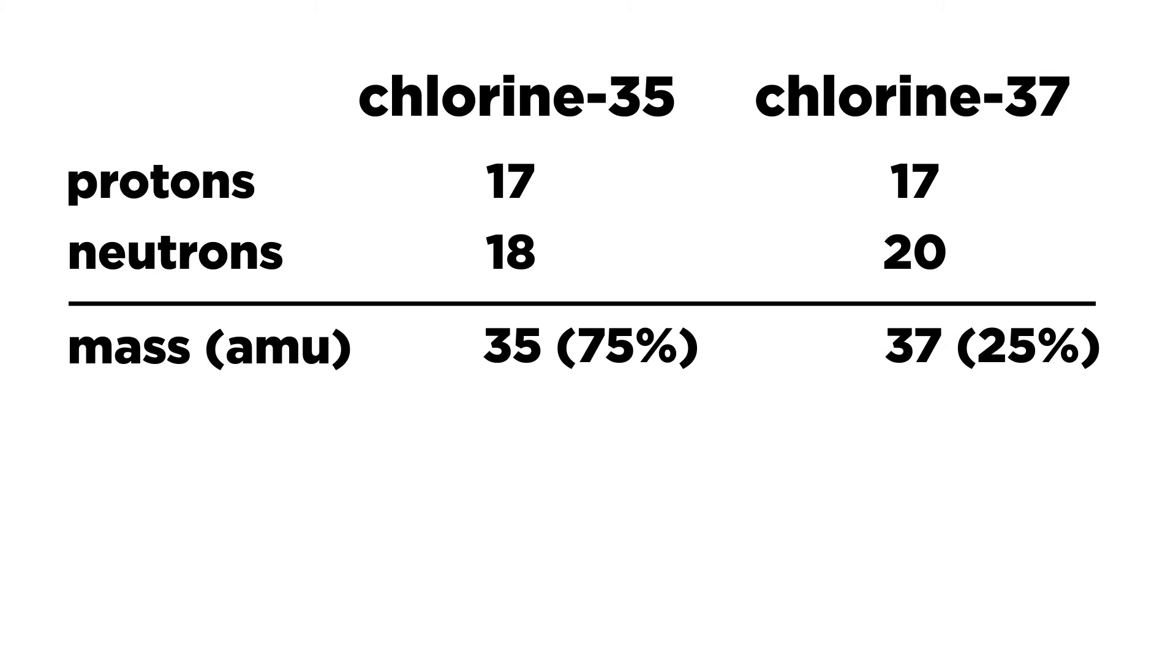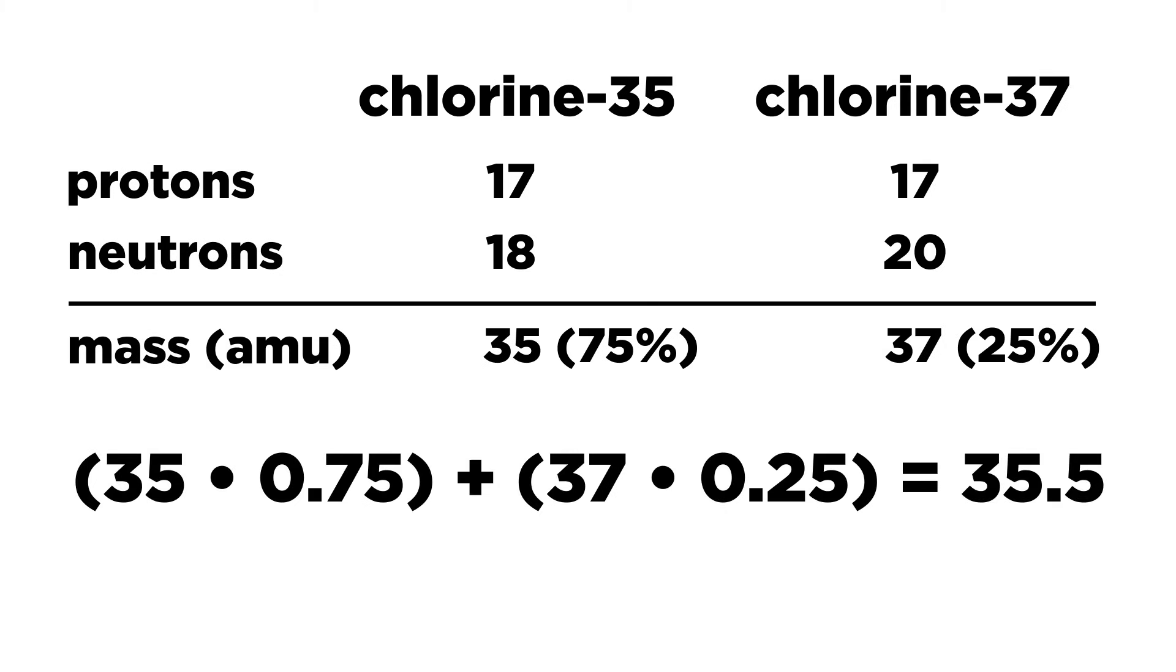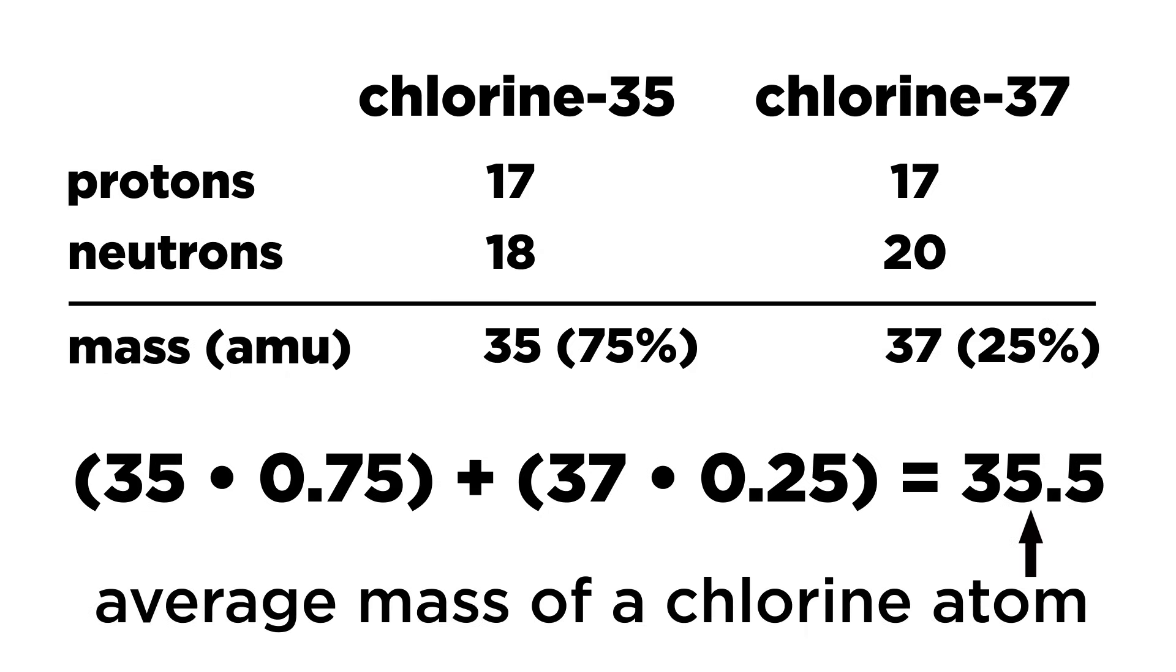So we have to do some math. Multiplying each mass number by a fraction of one that represents its abundance, and then adding these up gives us a more accurate number for the average mass of all chlorine atoms. So on the periodic table we have average atomic masses, but any individual atom will have its own mass number, which must be a whole number.